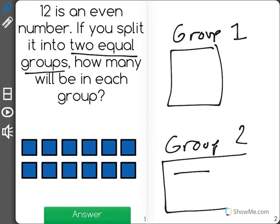And we are going to split the number 12 evenly into two groups. Now the way you split evenly is you give one at a time until you get to 12.